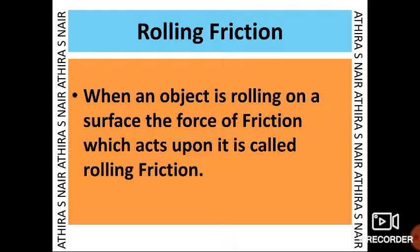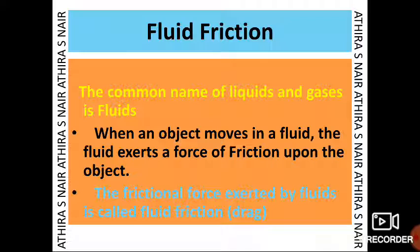The third type is rolling friction. When an object is rolling on a surface, the force of friction which acts upon it is called rolling friction. The fourth type is fluid friction. In science, the common name for liquids and gases is fluids. When an object moves in a fluid, the fluid exerts a force of friction upon the object. This frictional force exerted by fluids is called fluid friction or drag.